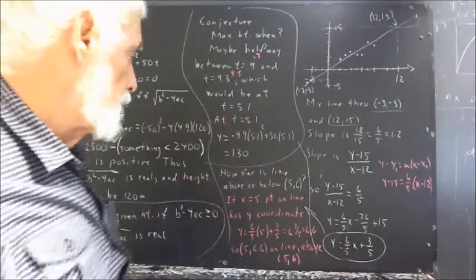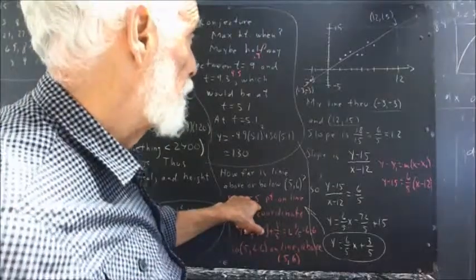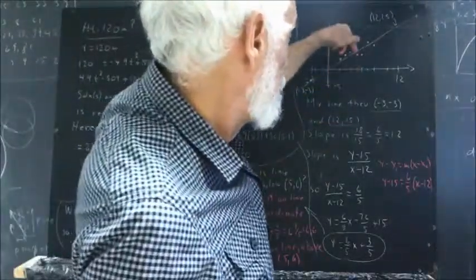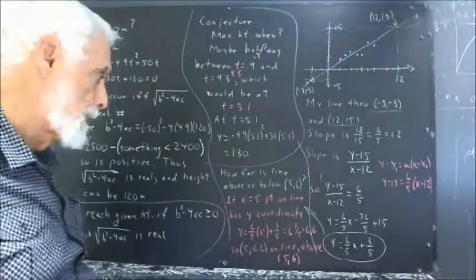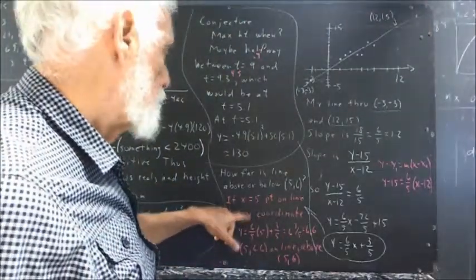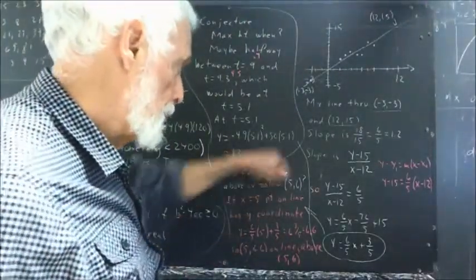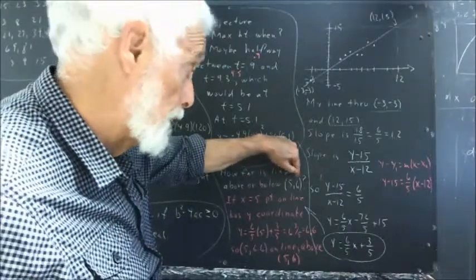So what we want to do is find the x equals 5 point, which is going to lie on the graph either above or below 5, 6. We're going to find the y coordinate and compare with the y coordinate of our data point.